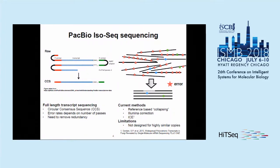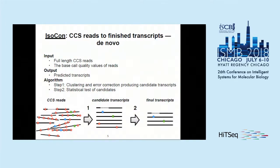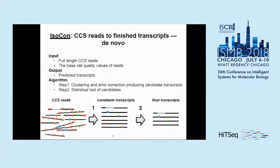None of these approaches are designed for transcripts that are highly similar. To this end, we developed an algorithm called IsoCon. The input is a set of full-length CCS reads and their base call quality values, and the output is a set of final predicted transcripts. The algorithm is structured into two main steps: first, a clustering and error-correction step producing candidate transcripts, and second, statistical testing to filter out candidates that still contain errors.